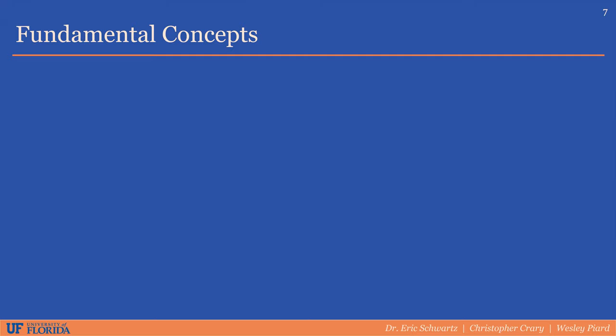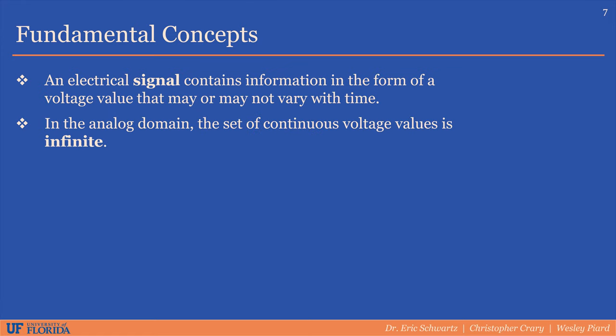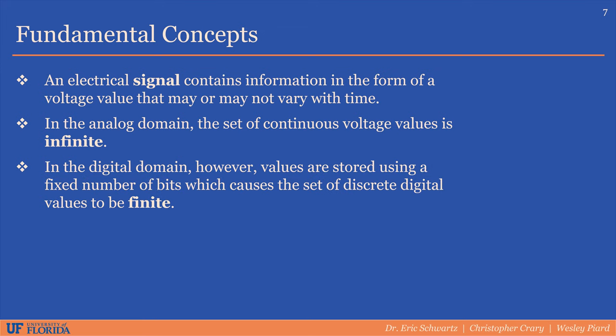We'll introduce some fundamental concepts required to learn about ADCs. An electrical signal carries information in the form of voltages. There are two relevant domains: analog and digital. The analog domain consists of a continuous, infinite range of voltage values, and the digital domain consists of discrete values stored using a finite number of bits. A digital n-bit number can represent 2 to the n different values.